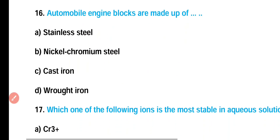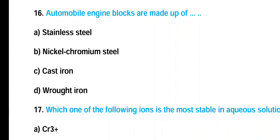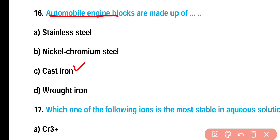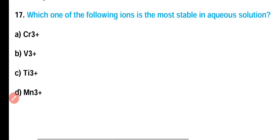Question number 16: Automobile engine blocks are made up of — stainless steel, nickel-chromium steel, cast iron, or wrought iron? Correct answer is option C. Automobile engine blocks are made up of cast iron.